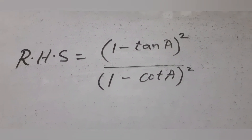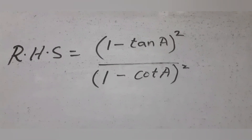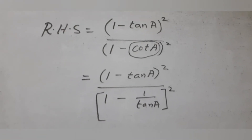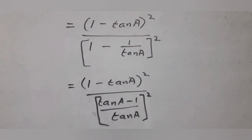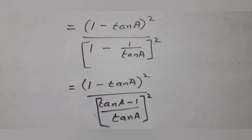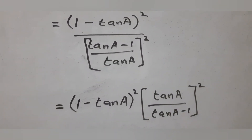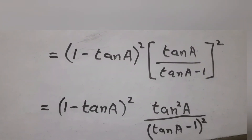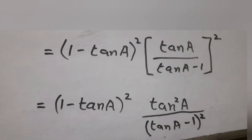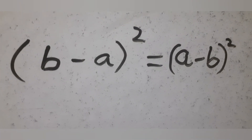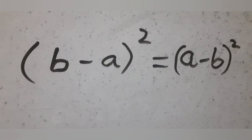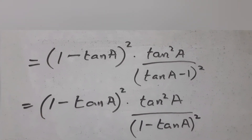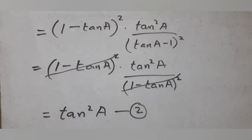Start from the right-hand side: change cot a to 1 by tan a in the denominator. Simplify the fraction in the denominator. Rewrite (tan a − 1) whole square as (1 − tan a) whole square. Cancel the common factors so that you get the right-hand side as tan square a — take it as equation 2.